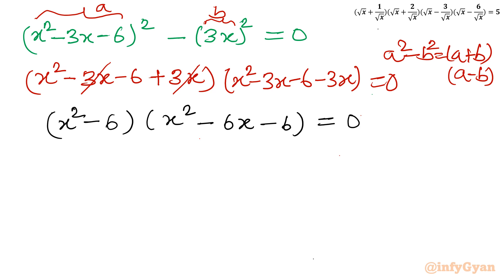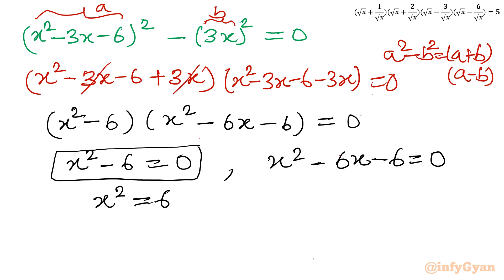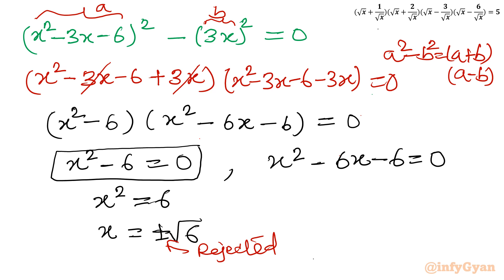Now it is very simple — f · g = 0 means either factor is zero. Let me consider x² - 6 = 0 first. Adding 6 to both sides gives x² = 6, and taking the square root gives x = ±√6. Remember our restriction: x must be positive, so we reject the negative solution. The accepted solution from this factor is x = √6.